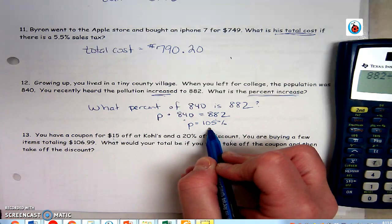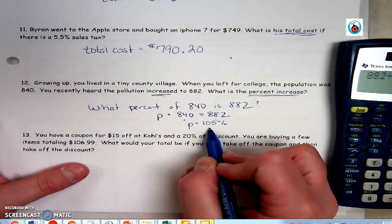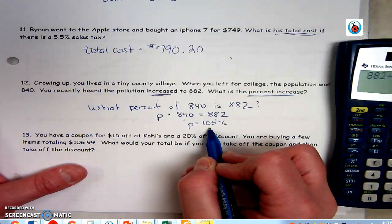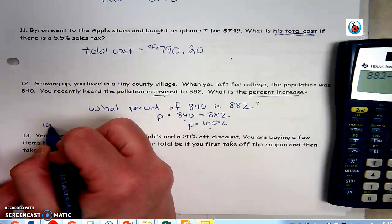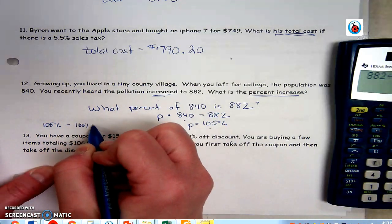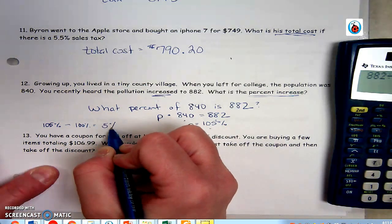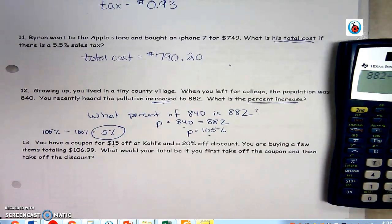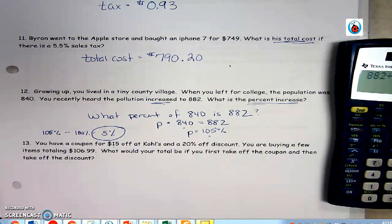Well, we know the original percent is always 100, so that means the percent must have increased by 5 percent because 105 percent, the new percent, minus the original percent is 5 percent. So there's your percent increase. That's your answer, 5 percent.